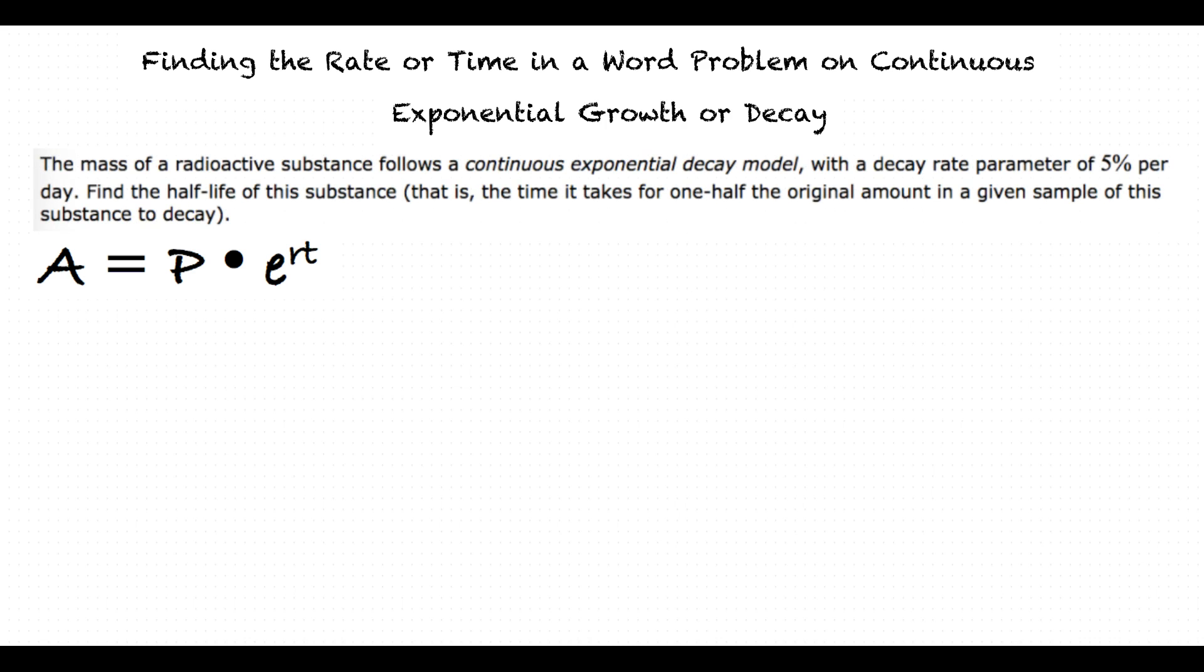The mass of a radioactive substance follows a continuous exponential decay model with a decay rate parameter of 5% per day. Find the half-life of this substance, that is, the time it takes for one-half of the original amount in a given sample of this substance to decay. Okay, rounding to the nearest hundredths. In this example, r is equal to negative 0.05, because the substance is losing material at a rate of 0.05 per day, right?